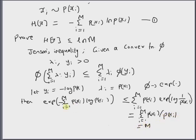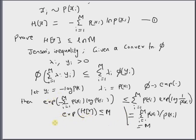The left-hand side exponent is nothing but the definition of entropy, so it is exponential of H of x. Therefore, exponential of H of x is always less than or equal to m, and hence taking logarithm on both sides, H of x is always less than or equal to logarithm of m. Hence the theorem is proved.